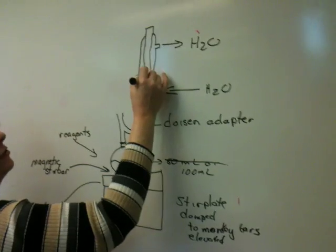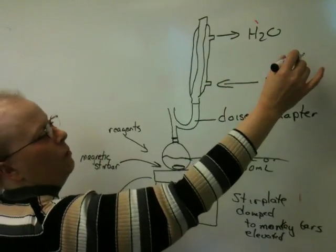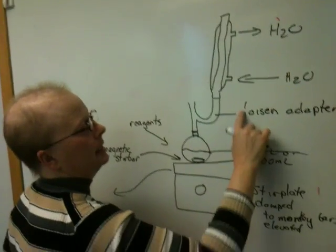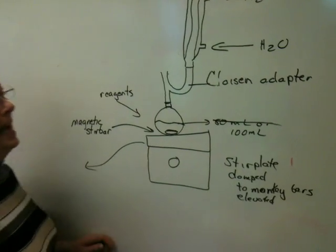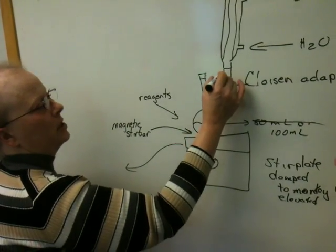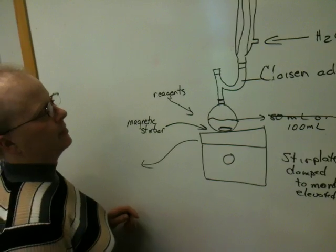So this is just a standard reflux condenser. Water in, water out. This is a Claisen adapter. It's that curved adapter. These little marks are meant to represent the joints.